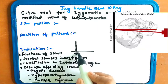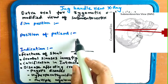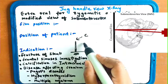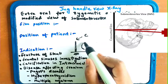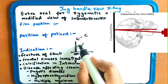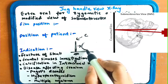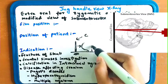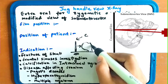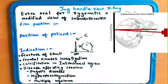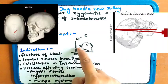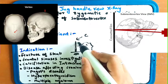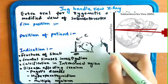The cassette holding device is placed on the floor. For the position of the patient, the head is centered on the cassette. The neck is tipped backward slightly. The vertex of the skull will touch the cassette — there will be no space between the cassette and the skull; they will be touching each other.